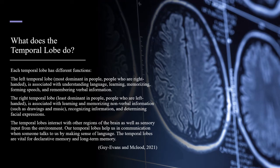Each temporal lobe has different functions. The left temporal lobe, most dominant in right-handed people, is associated with understanding language, learning, memorizing, forming speech, and remembering verbal information. The right temporal lobe, least dominant in left-handed people, is associated with learning and memorizing non-verbal information such as drawings and music, recognizing information, and determining facial expressions.